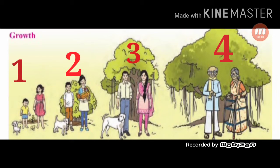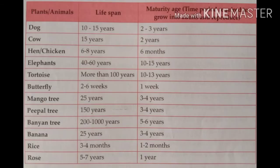During the period of its growth, the baby gains in height, weight and strength. In the same manner, all animals grow into adults in a certain period. Generally, humans require 18 to 21 years for this growth. Here is the lifespan and age of maturity of some plants and animals.